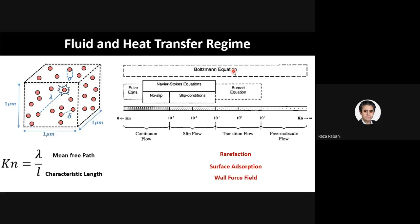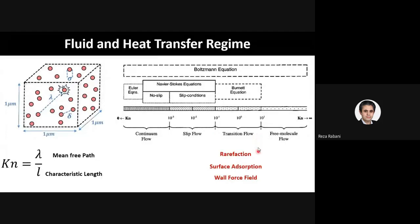But there are two other phenomena which can be considered: surface adsorption — where gas is adsorbed on the surface of the channel wall — and wall force field, which cannot be precisely modeled by the Burnett equation or Boltzmann equation. In order to solve the problem in the transition flow regime, where the Knudsen number is from 0.1 up to 10, it is better to use molecular dynamics to solve the heat transfer.